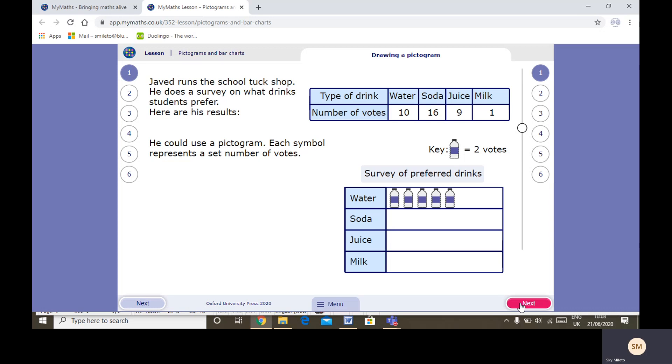Javid needs to present his results to the school council. So he could use a pictogram. Each symbol represents a set number of votes. This bottle shows two votes. And therefore, water, we can see we would count in twos. We can see 1, 2, 3, 4, 5 bottles. So we'd know that the number of votes would be 2, 4, 6, 8, 10.